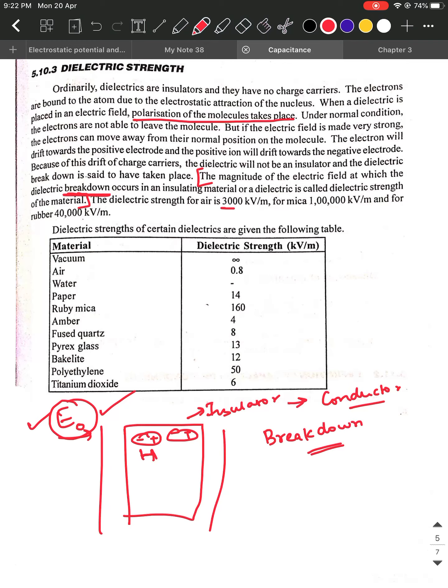Generally the dielectric strength of air is given as 3000 kilovolt per meter. Remember there are two units for electric field: one is Newton per coulomb as it is defined as force per unit charge. The other unit is volt per meter because E is also equal to dV by dr, it is defined as the potential gradient.